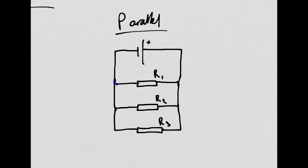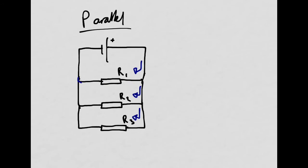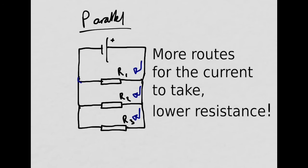Now let's talk about parallel circuits. This is a parallel circuit with three different branches. The current can flow either through R1, R2, or R3. This means that the total resistance of the circuit is actually going to be lower than the resistance of any individual resistor. Adding more routes for the electricity to flow reduces the resistance, so more resistors in parallel reduces the overall resistance of the circuit.